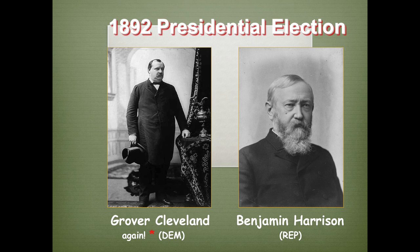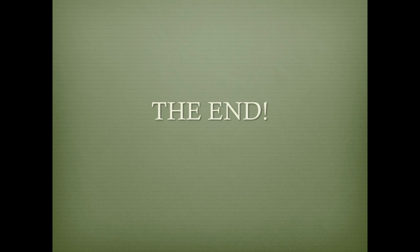But it doesn't go well for Grover Cleveland's second term — Americans were happy to get him back, and then a great panic happens in 1893. I'm going to talk about that panic in class. That's going to lead to that election of 1896 that I teased you about — that's the Wizard of Oz election, and it'll all be set up later. Hopefully I entertained you and spread some knowledge. Don't forget your video logs are on Edmodo, and I'll see everybody later in class. Have a good night!